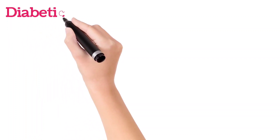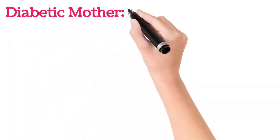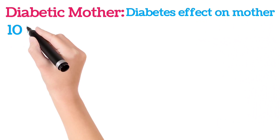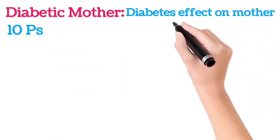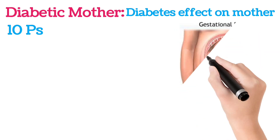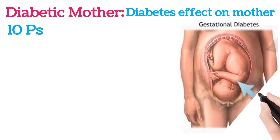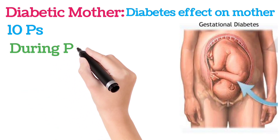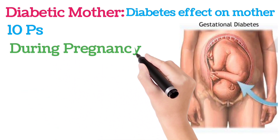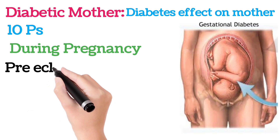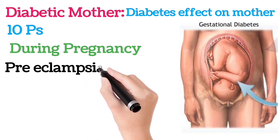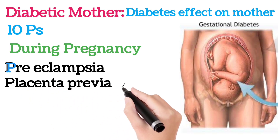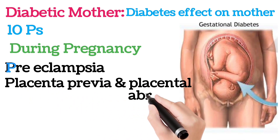Diabetic mother: diabetes effect on the mother. There are 10 Ps during pregnancy. The first 5 Ps during pregnancy include: preeclampsia, placenta previa, and placental abruption.